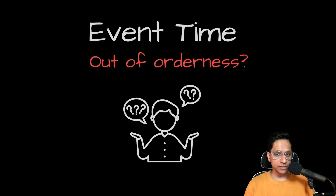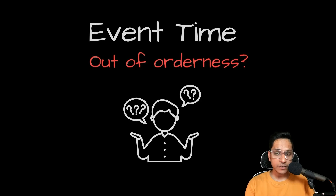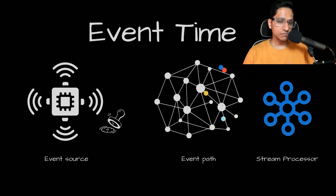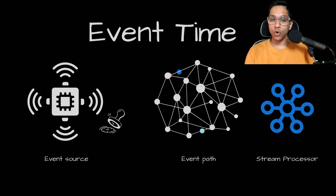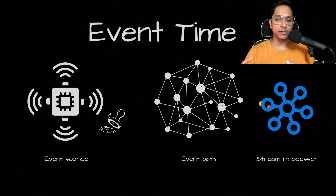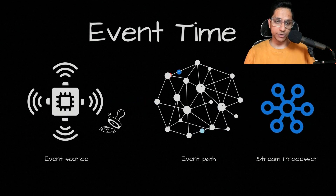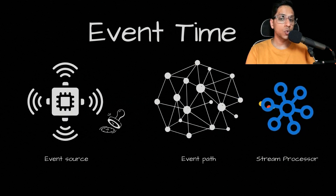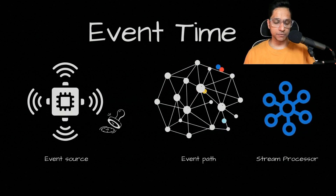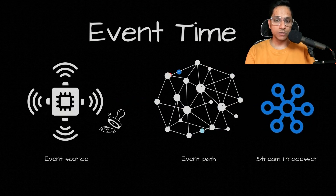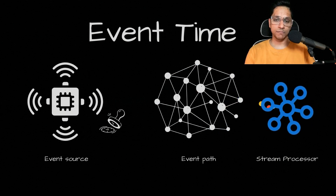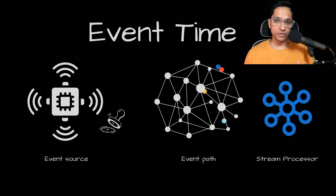Now let's discuss an important challenge when we decide to use event time. As we said, we can receive events out of order because we use event time and not when it is processed. Events can come out of order in your stream processor — but why? Because even if they were produced in order, they may take separate paths to arrive in the stream processor. For example, if events end up in two separate partitions and one partition consumer is slower than the other, even if the events are produced in order, they may arrive in the stream processor in a different order, which is a challenge.